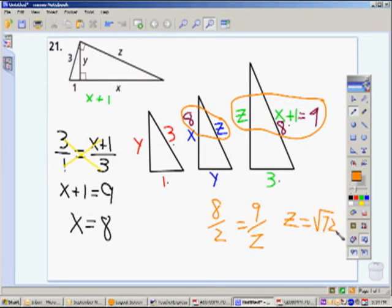It didn't change the fact that I set the proportion up wrong. So make sure on your homework, you don't do that. The square root of 72 is six square roots of two. So now I know what Z is.